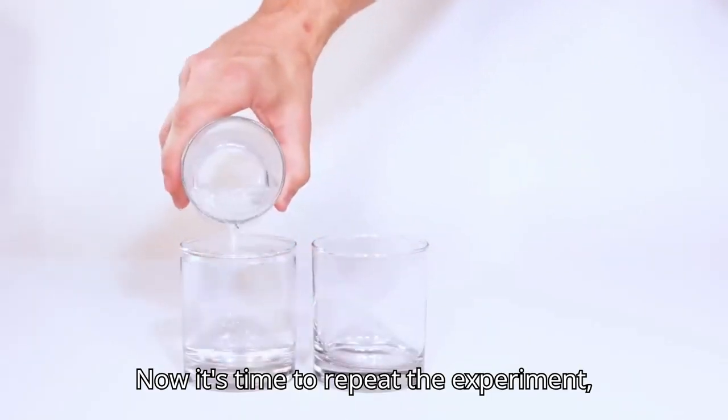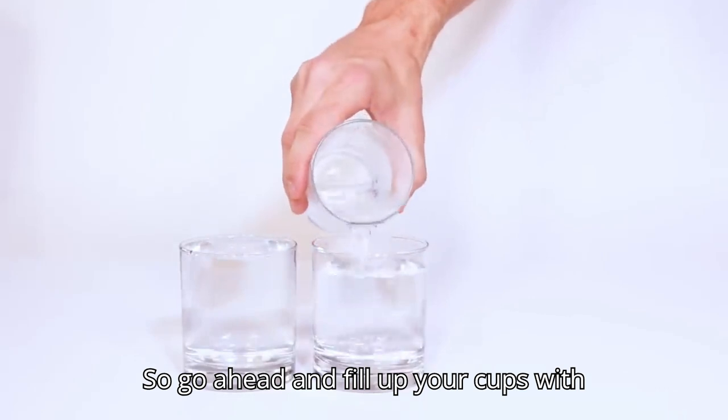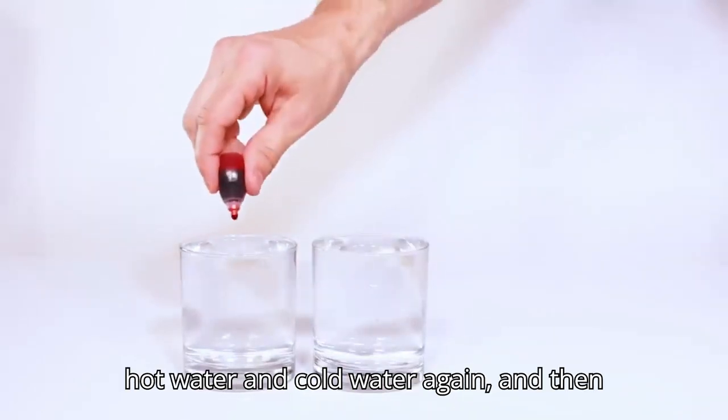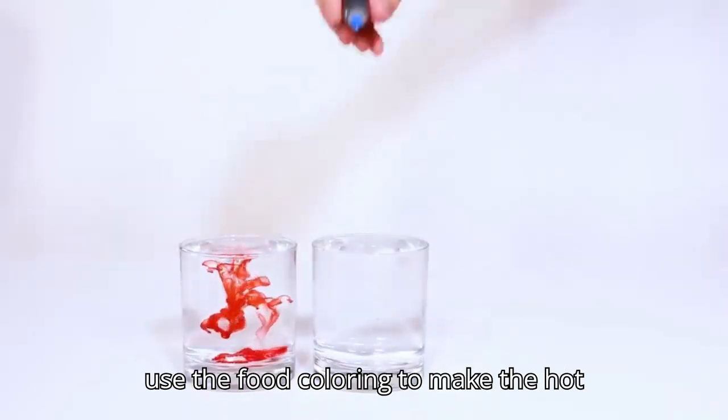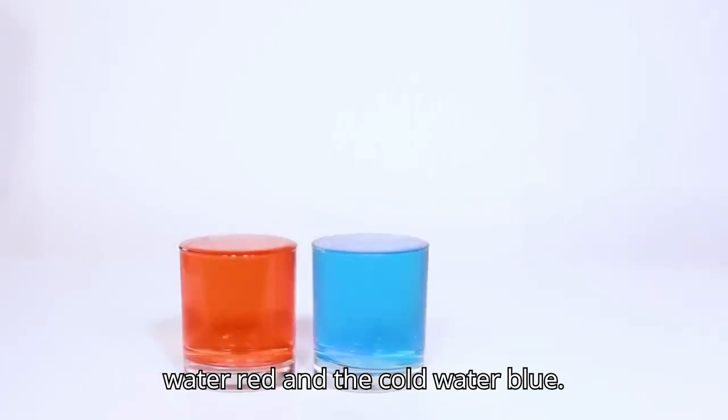Now it's time to repeat the experiment, only this time we're going to reverse it. So go ahead and fill up your cups with hot water and cold water again, and then use the food coloring to make the hot water red and the cold water blue.